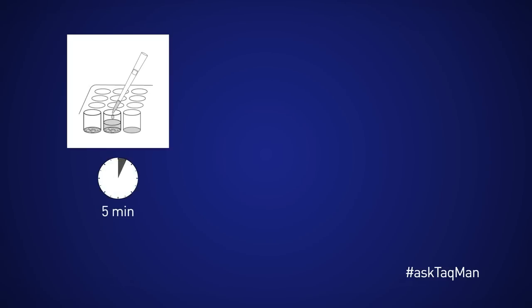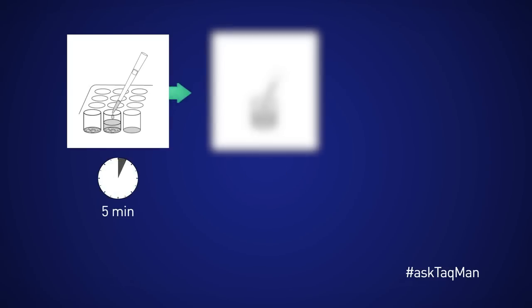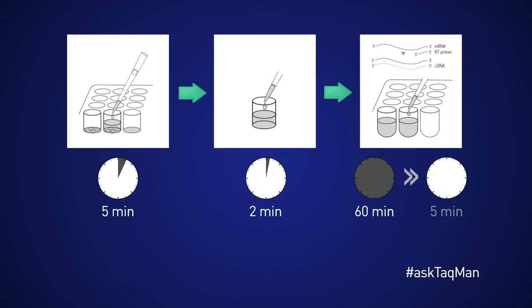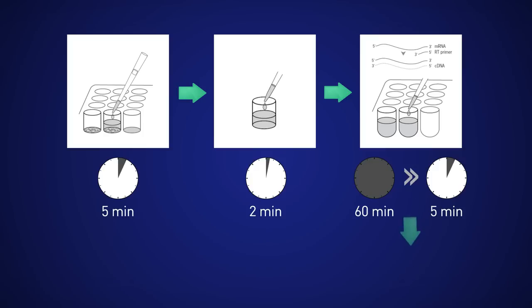One excellent option for either cultured cells or micro-dissected samples is to use a direct lysis approach. The idea is to lyse cells for five minutes, releasing the RNA into solution, to perform a two-minute stop reaction, then to add the lysis directly to a reverse transcription reaction such that no RNA is lost. The resulting cDNA then goes directly into a real-time reaction.